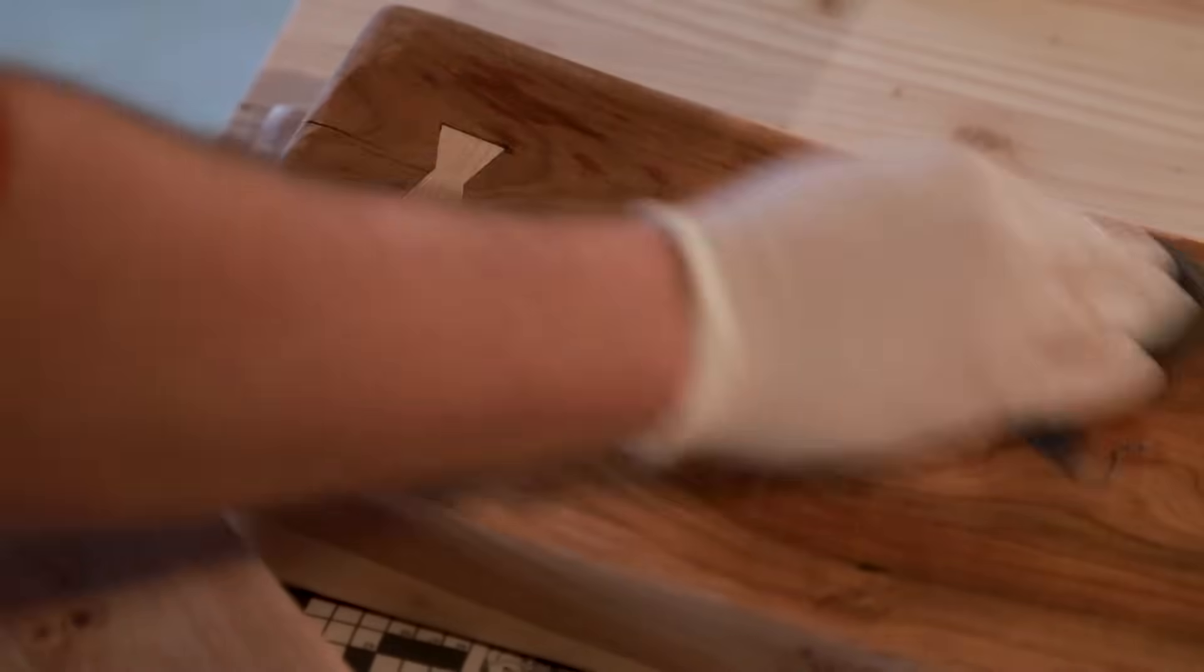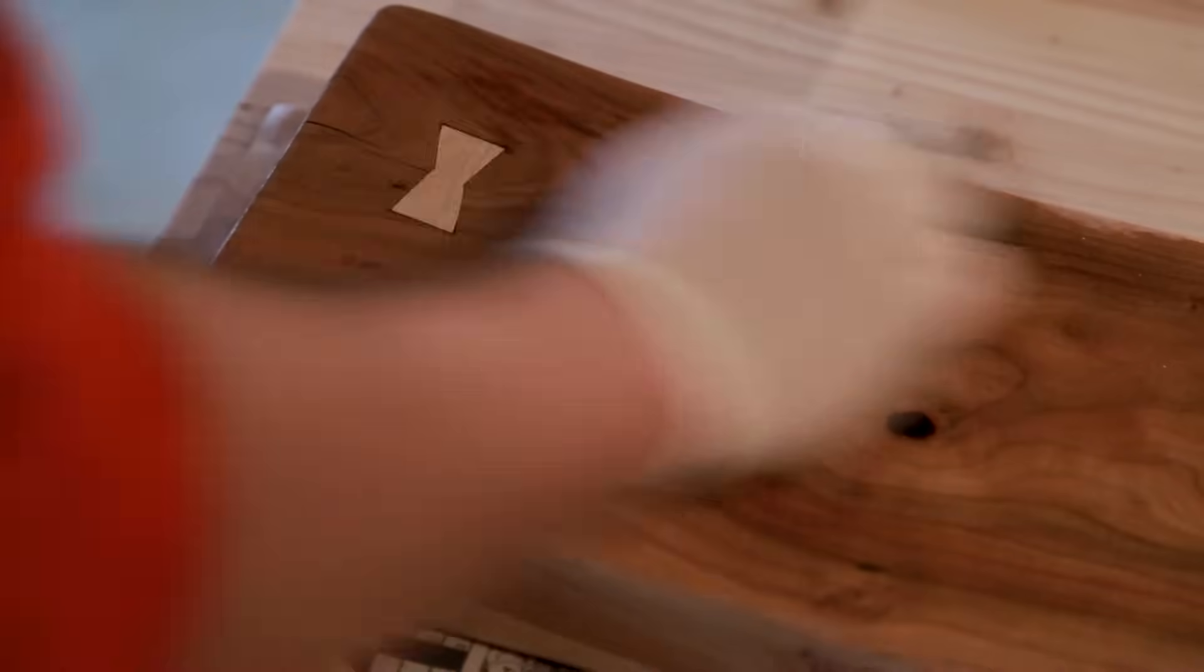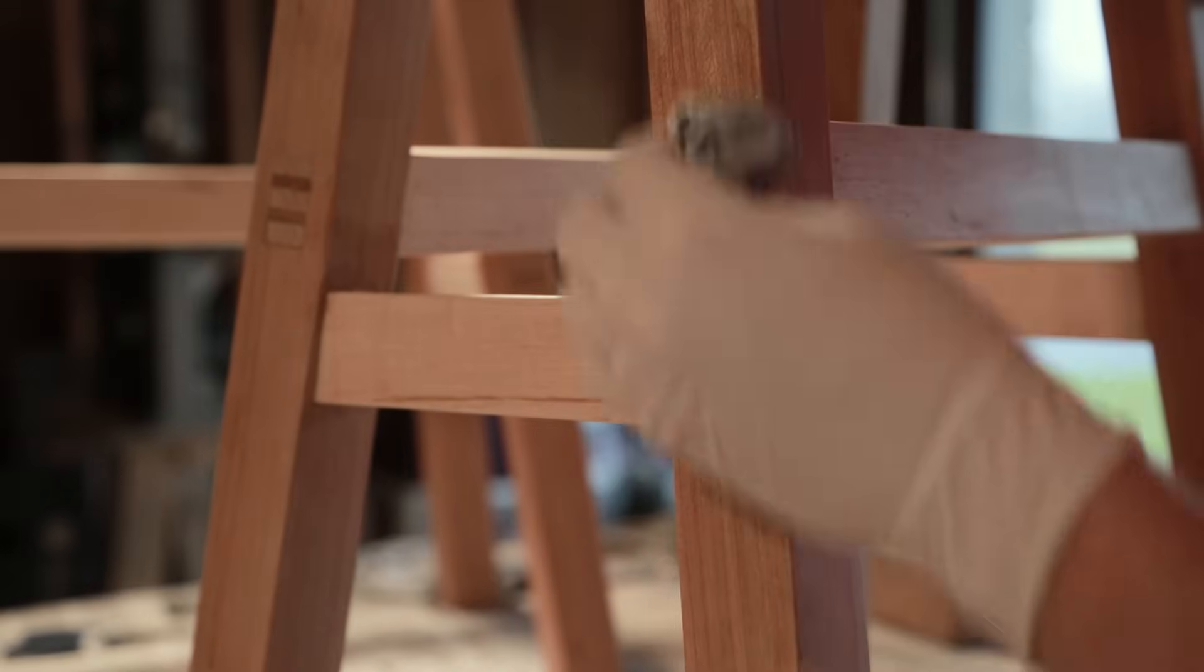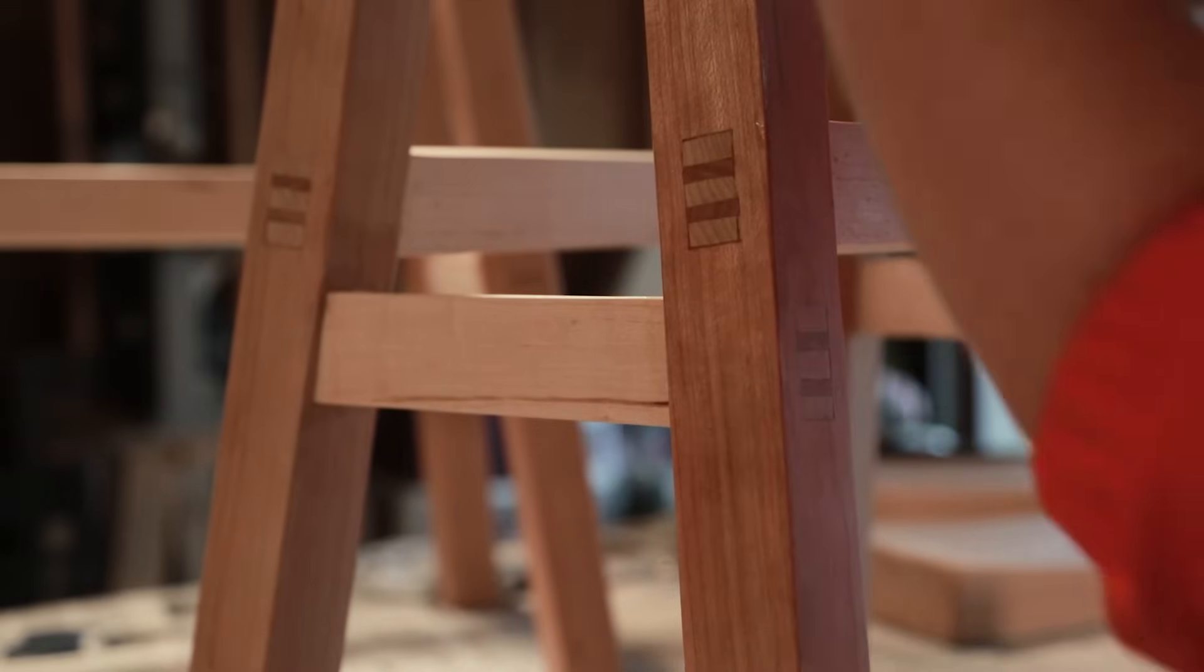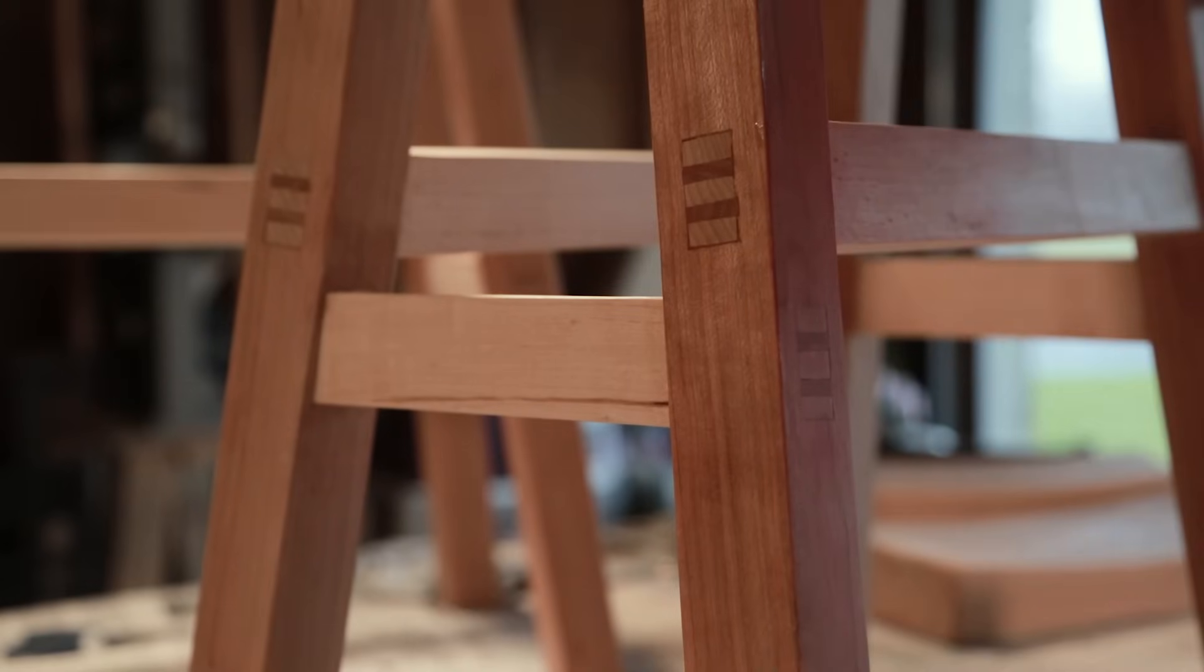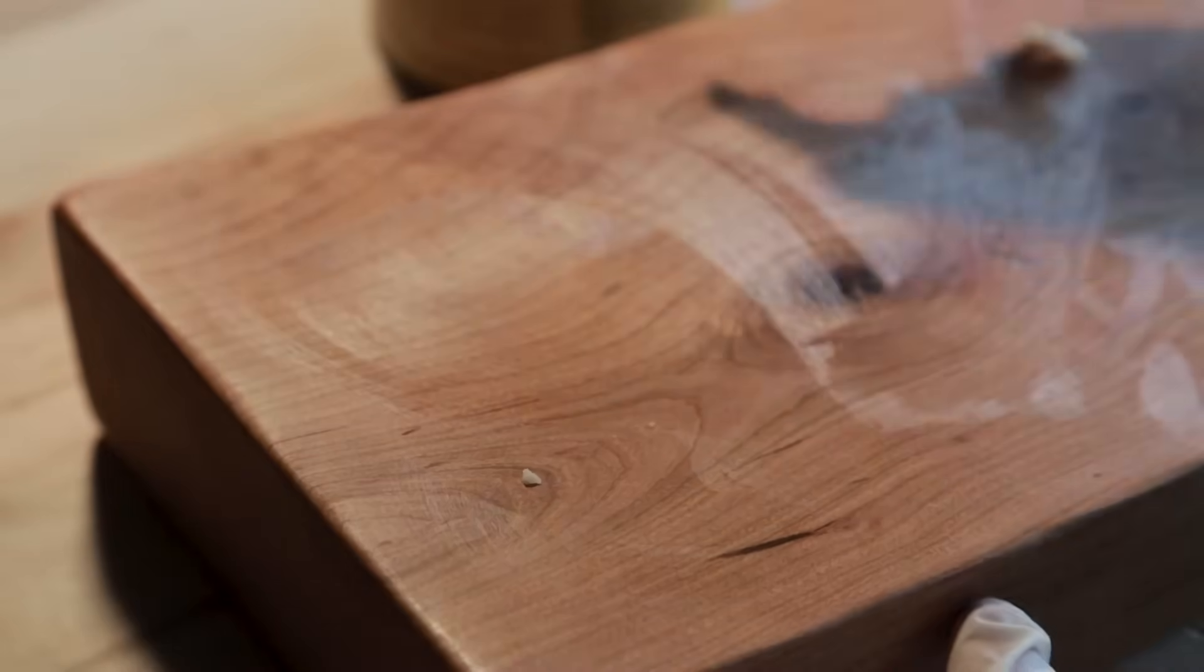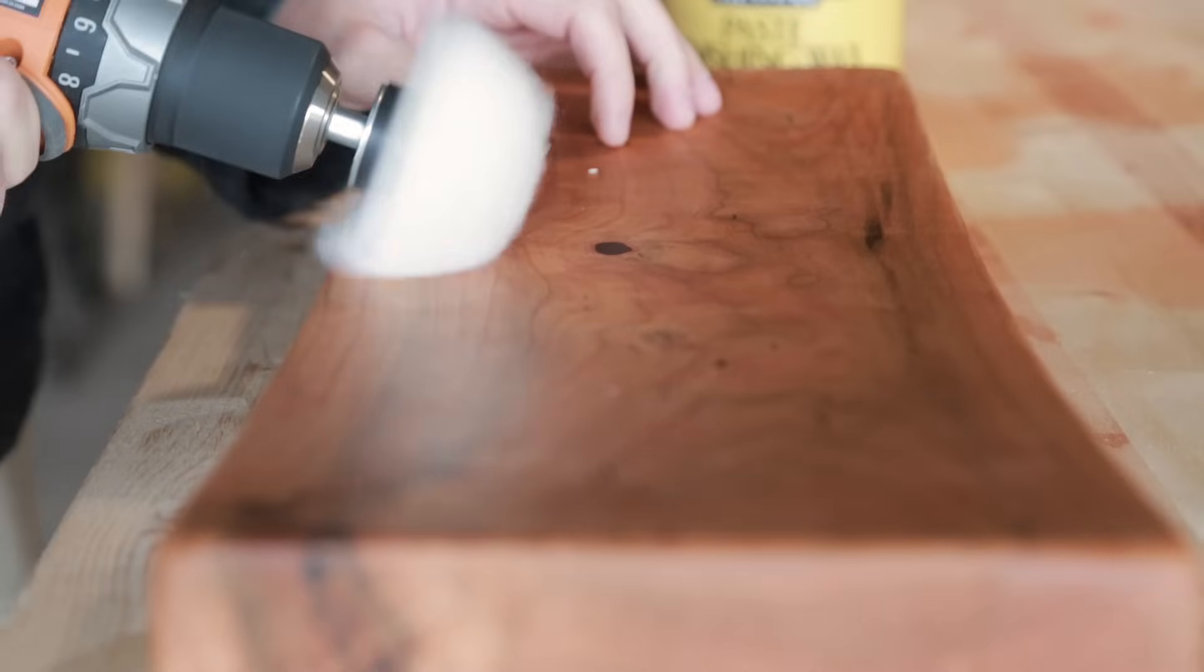For finish, I started with a half cut of shellac to try to prevent some of the blotchiness that comes with cherry. I then followed up with some cherry danish oil. I decided to use some paste wax on the top and buffed it out to get a super smooth finish.